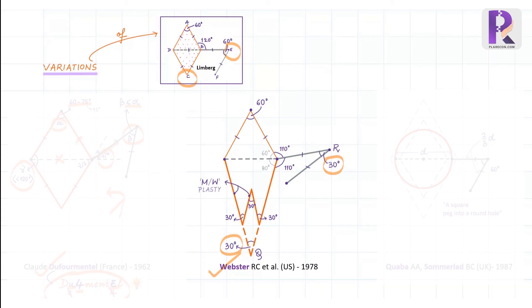Hence, he came up with the third modification, which was 30-degree M-plasty of the defect angle at the base of the flap to decrease the final suture line length.